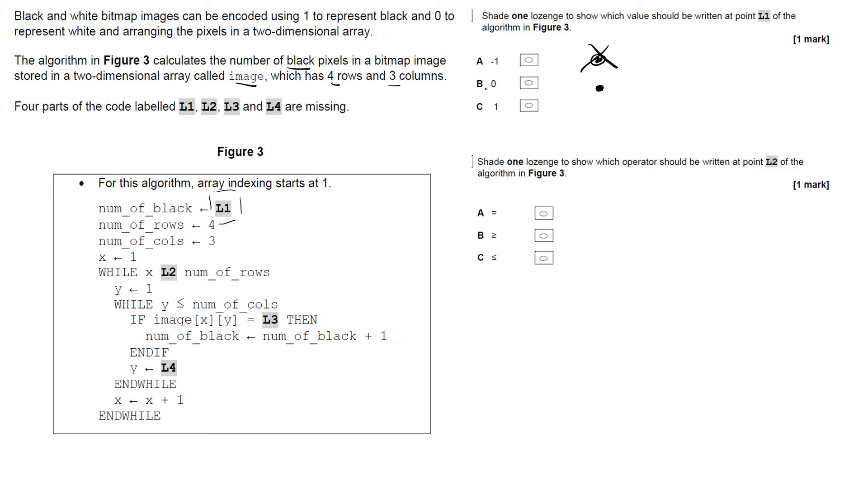So let's see if there's a zero in here, and yes there is. So we can shade in zero. We've got that now as zero. Shade one lozenge to show which operator should be written at point L2 of the algorithm in Figure 3.